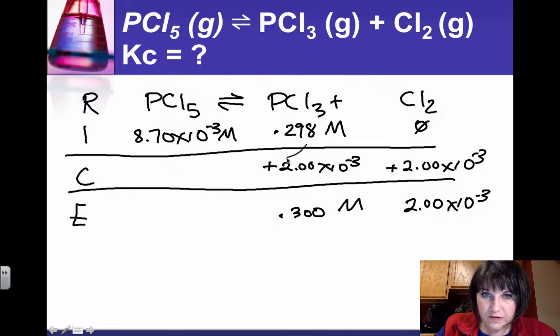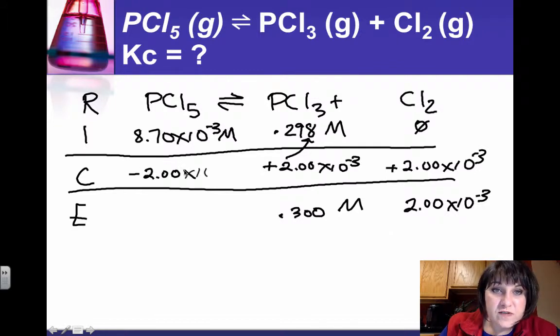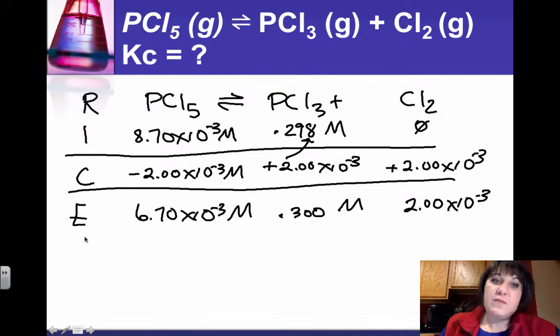because the 2 to the minus 3 is in that decimal. And over here, it's a 1 to 1 mole ratio, and my reactant gets used up, so that means I used up 2 times 10 to the minus 3 moles per liter, and 8 minus 2 gives me 6.70 times 10 to the minus 3 moles per liter remaining of the PCl5.